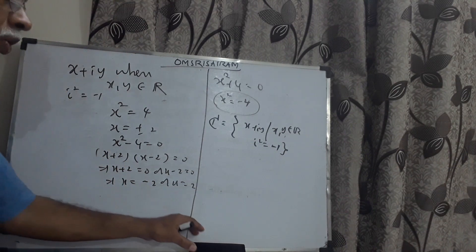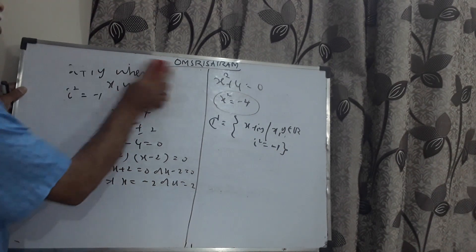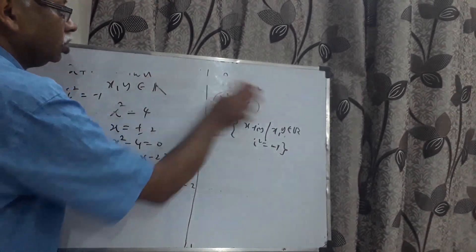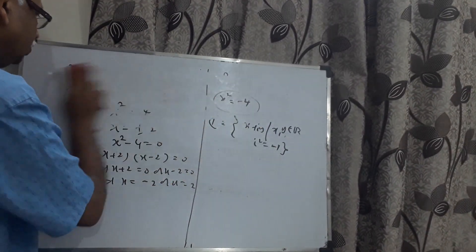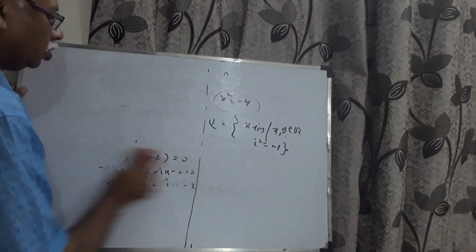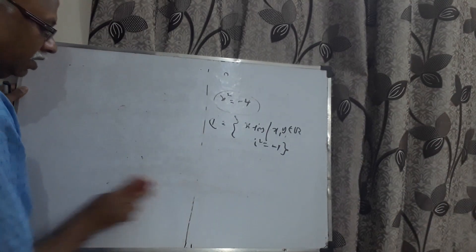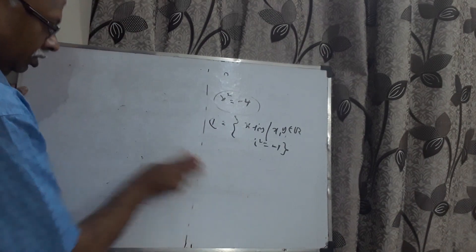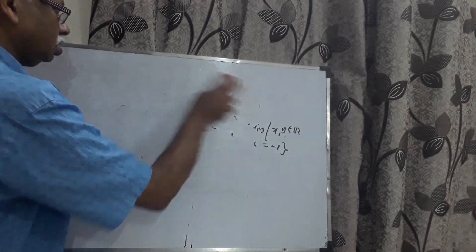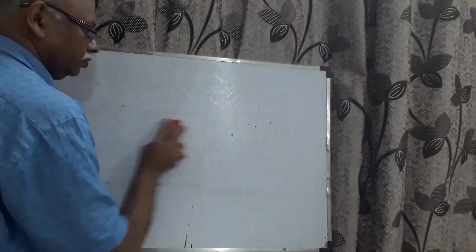This is our introduction. The necessity for complex numbers arises because there is no provision to get the solution of equations of the form x squared plus four equals zero, or any quadratic equation where the discriminant delta is less than zero. Therefore, there was a necessity to introduce the set of complex numbers.